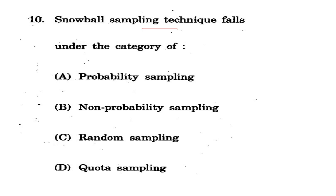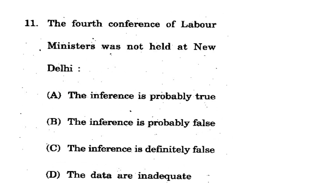Snowball sampling technique falls under which category? Options: probability sampling, non-probability sampling, random sampling, or quota sampling. The correct option is B - non-probability sampling. Snowball sampling is a technique that is part of non-probability sampling. So option B is correct.